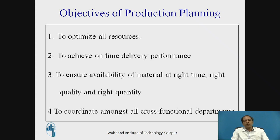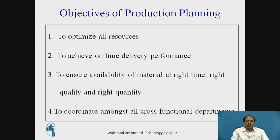To ensure availability of material at the right time, right quality, and right quantity, PPC starts with procurement of material. Material availability is crucial because without material, production cannot start at all. The customer gives some lead time — out of that lead time, most of it is consumed by the material department, since purchasing takes its own time, leaving very little time for actual manufacturing.